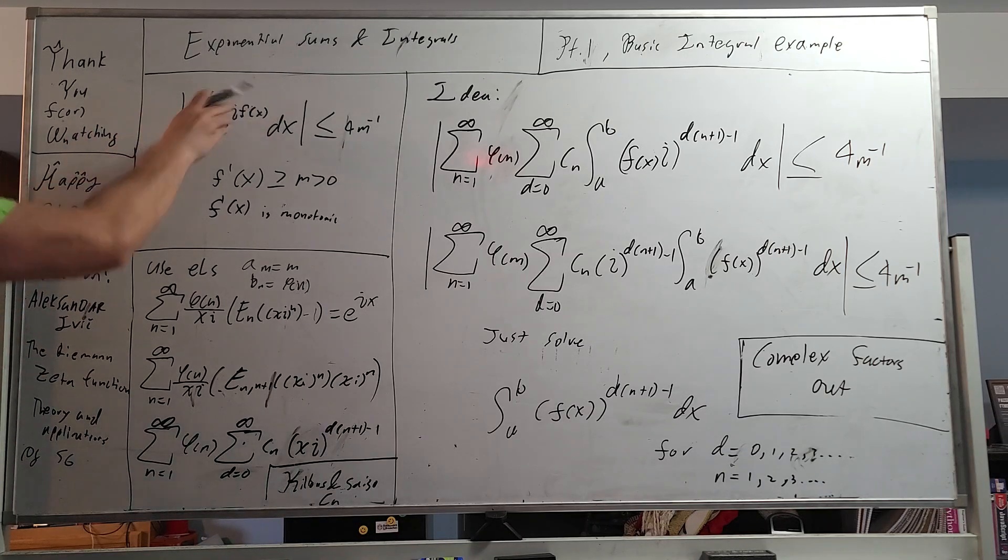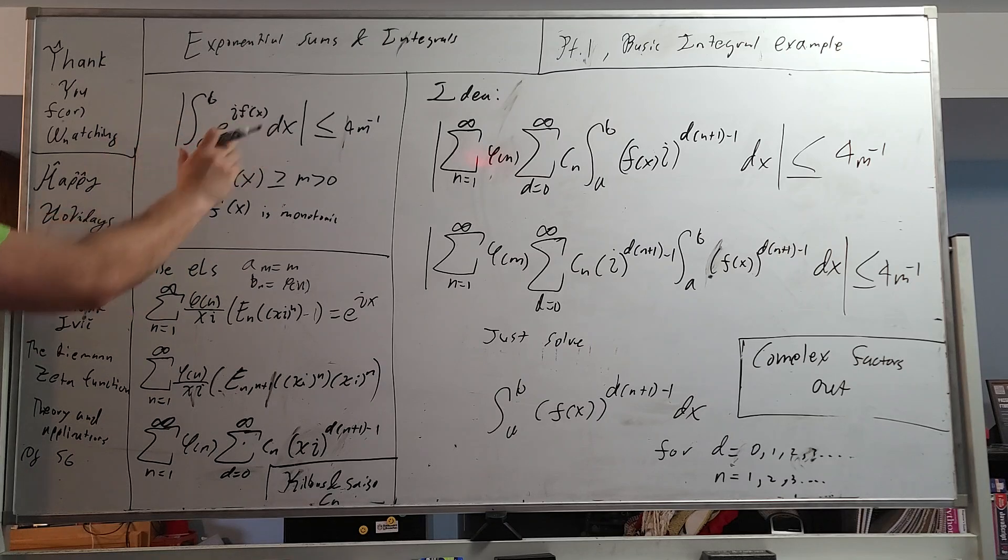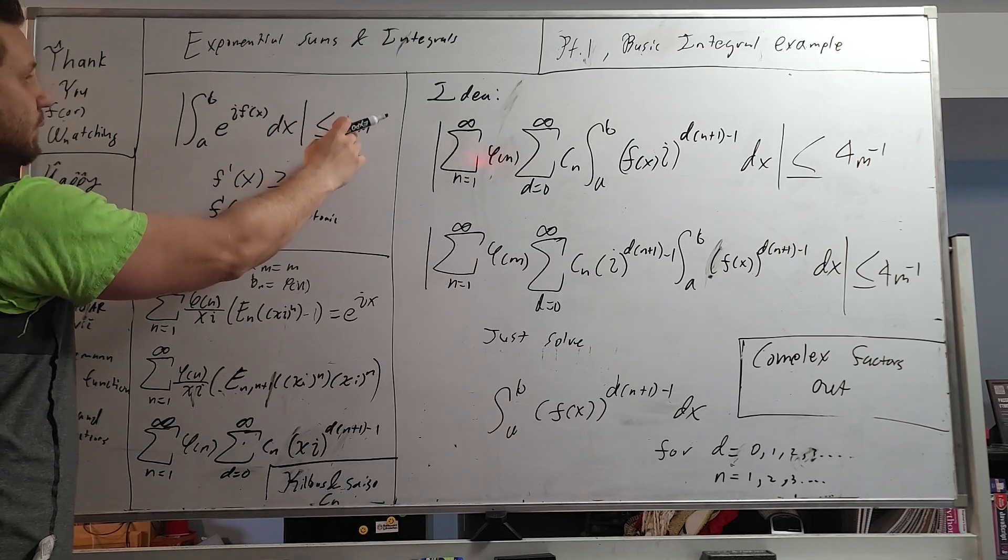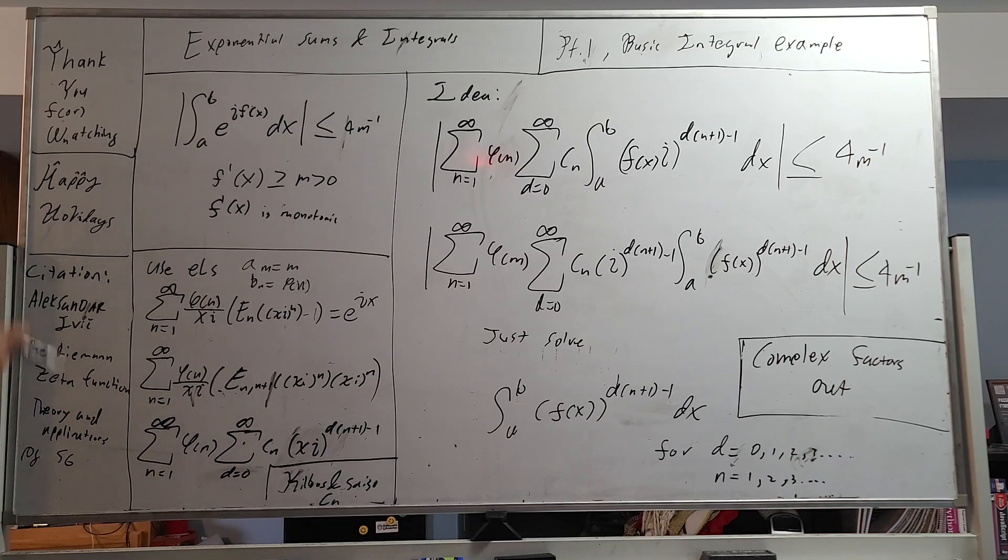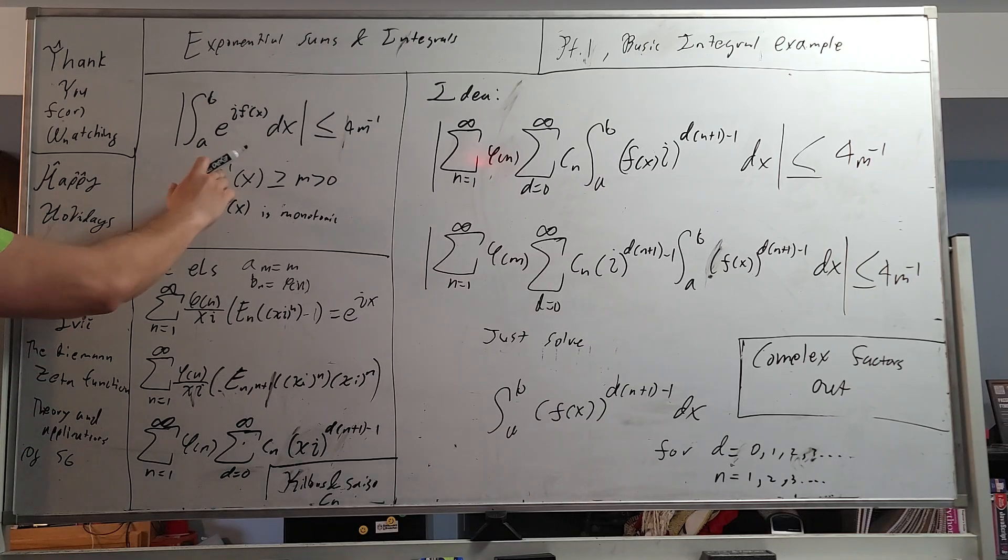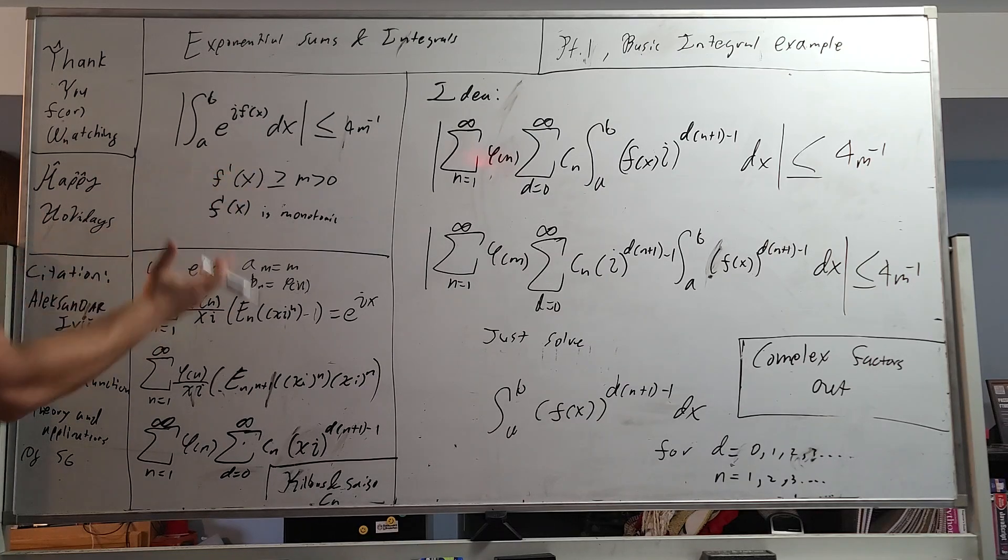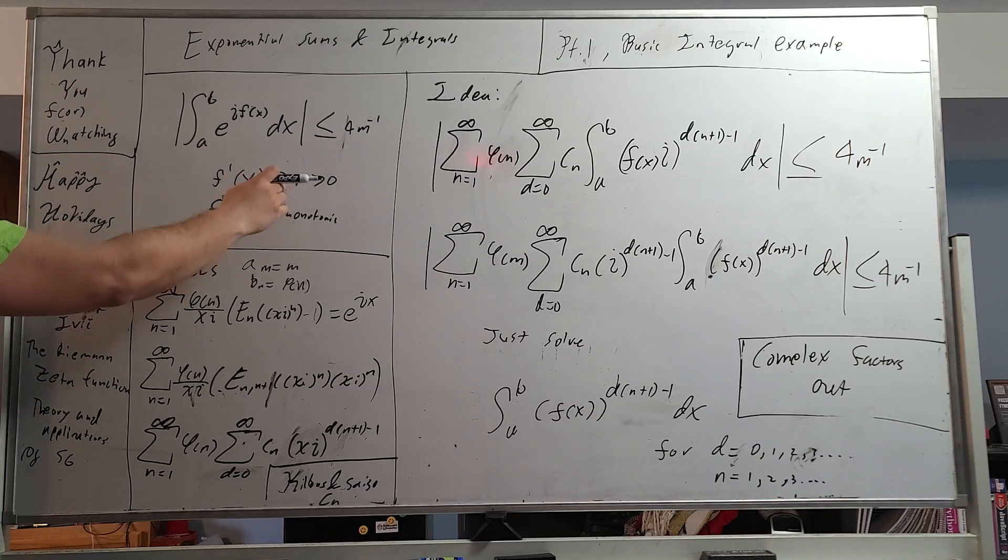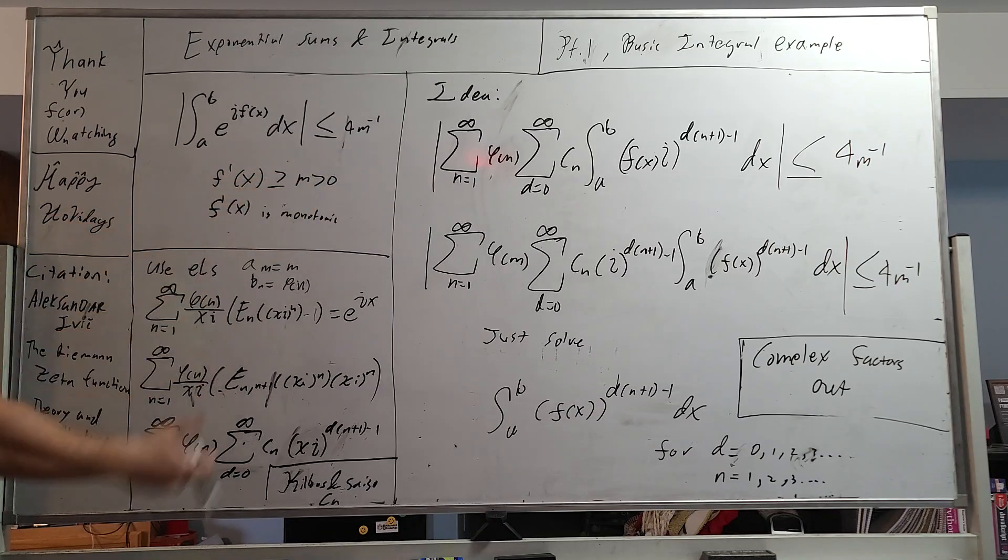We have this exponential integral, and in fact the absolute value of it is less than or equal to 4 times n to the negative 1. And there's two conditions: f prime of x, or the derivative of f(x), is greater than or equal to n, greater than 0. And f prime is monotonic.